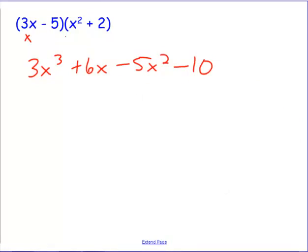You're not going to have anything to combine, you might just need to clean it up and get it into standard form. 3x cubed minus 5x squared, remember the sign goes with it, and then plus 6x and my constant term should be last. I end up with a polynomial of the third degree which would be cubic.